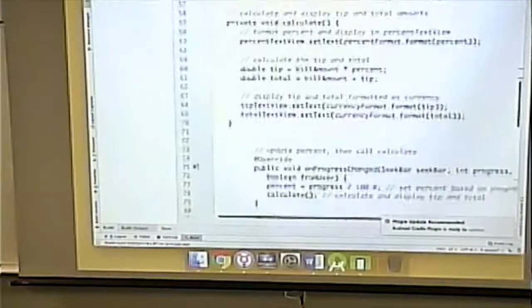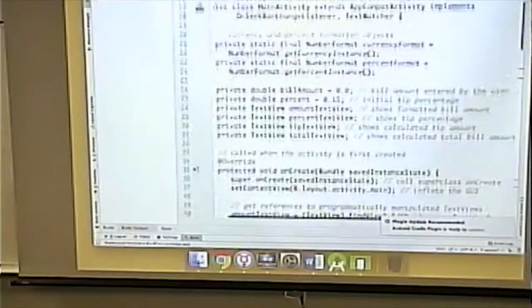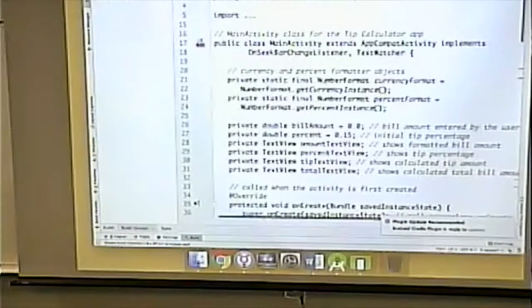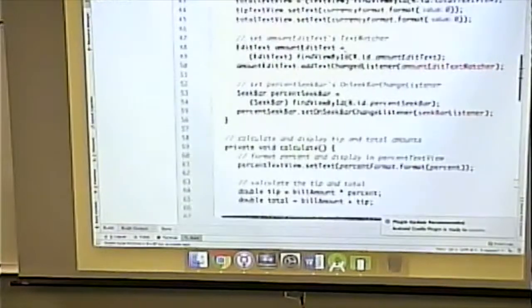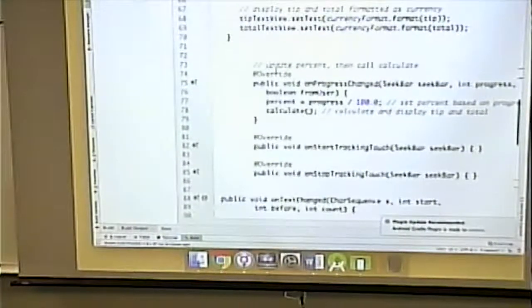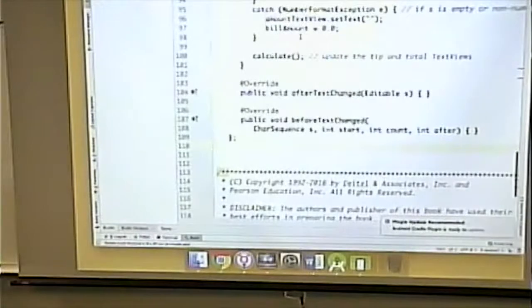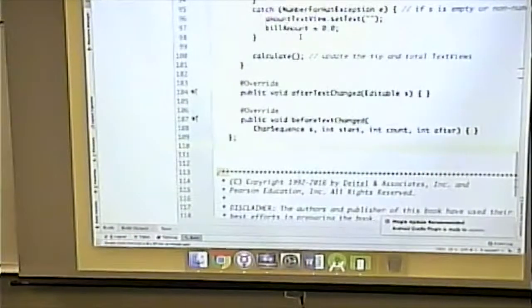And now this one activity class has, implements those two interfaces. Here are the functions for the text watcher. Or no, here are the functions for the seek bar. Here are the functions for the text watcher. And it's going to work. Probably.